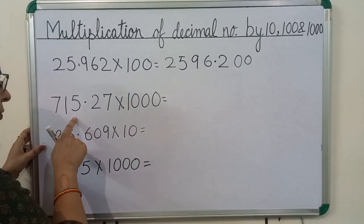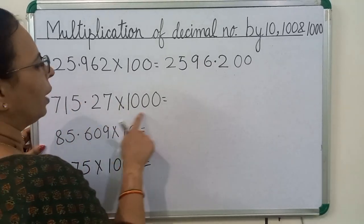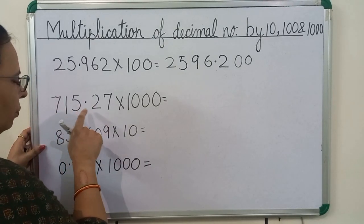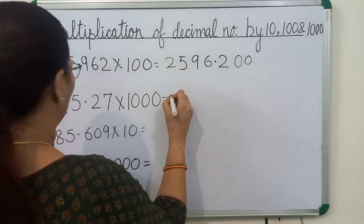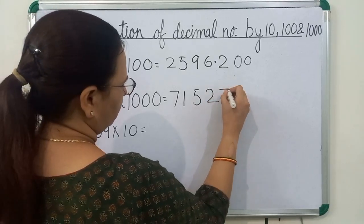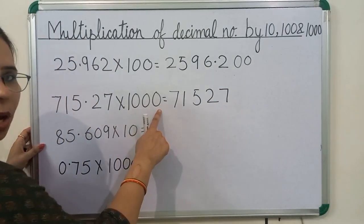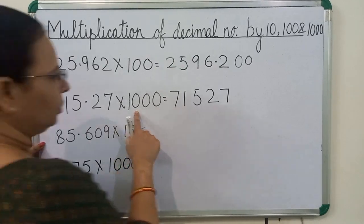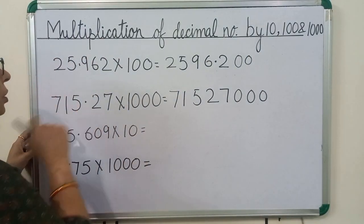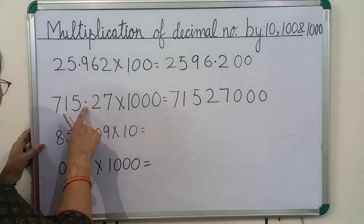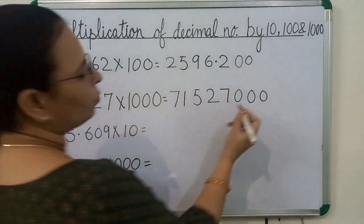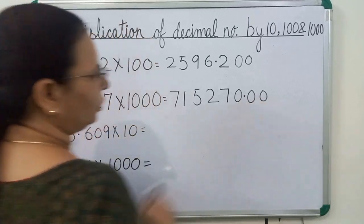We will multiply 715.27 by 1000. When we multiply 715.27 by 1, we get 71527. 1000 has 3 zeros, so we will write here 3 zeros. Now we will focus on the decimal point. You can see the decimal point is before 2 digits, so in the answer we also put the decimal point before 2 digits.